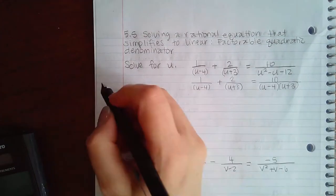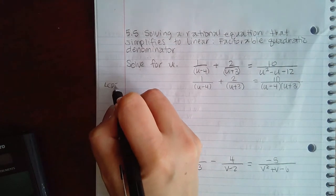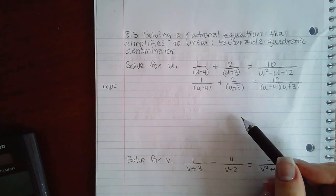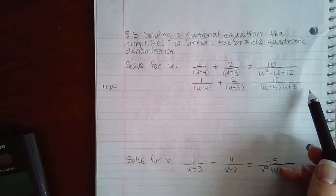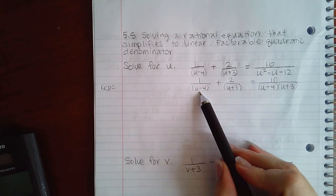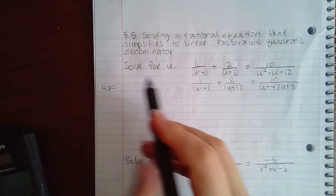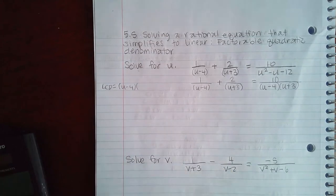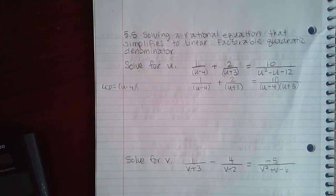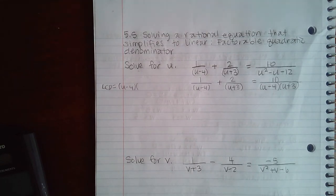Now that I have that, I can find my LCD. My LCD is going to be any factors that these three denominators have in common. I noticed that the first fraction and the third fraction both have a u minus 4, so they have that in common.